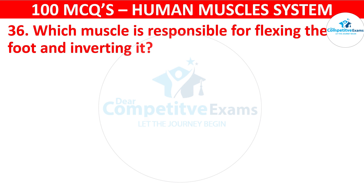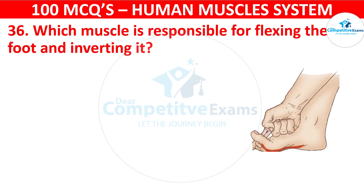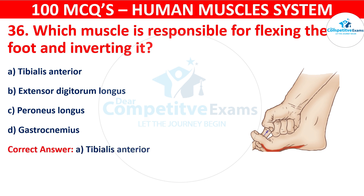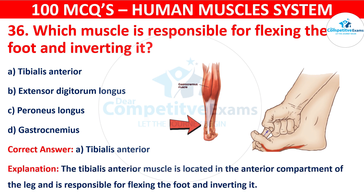Question 36. Which muscle is responsible for flexing the foot and inverting it? The correct answer is A, i.e. Tibialis anterior. The Tibialis anterior muscle is located in the anterior compartment of the leg and is responsible for flexing the foot and inverting it.